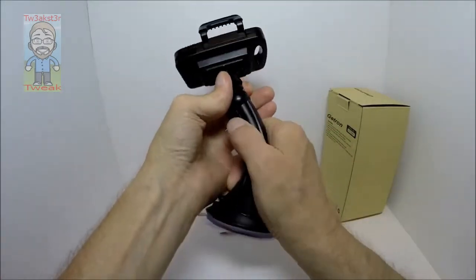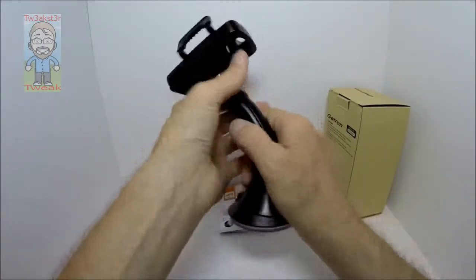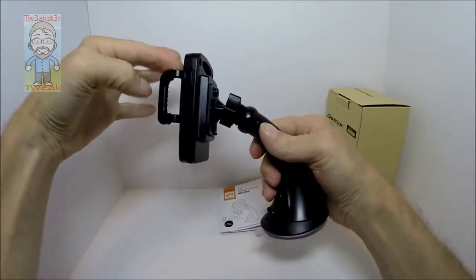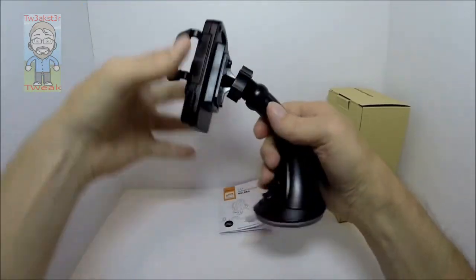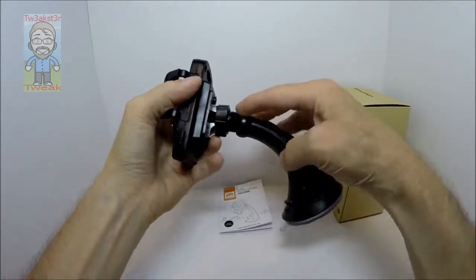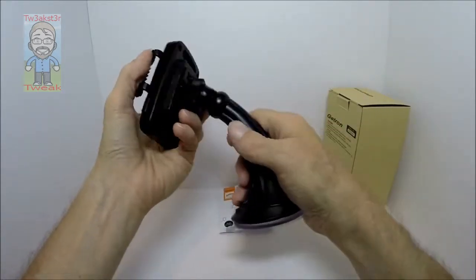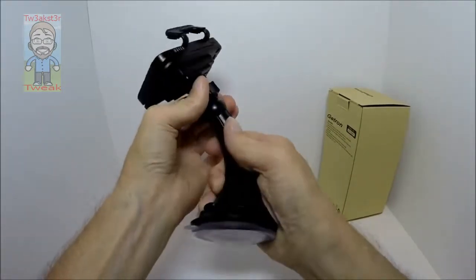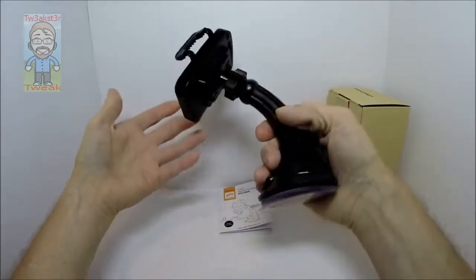So basically when you get this, you can see this piece here just goes right in. I'm not going to disconnect it, but basically just push it into the little socket here. It's a little ball socket type joint, and you just screw that until it's tight. There you go.